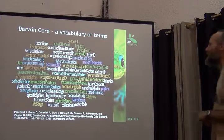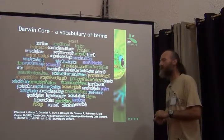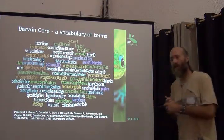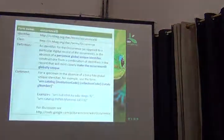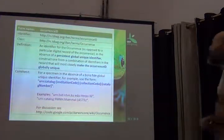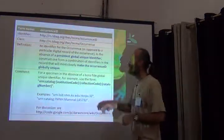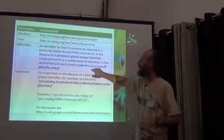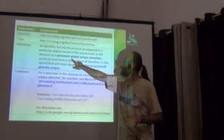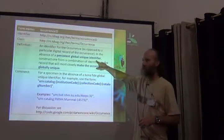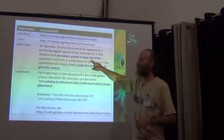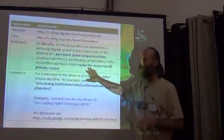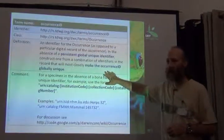Going back to Darwin Core — one example of an identifier we've already seen is the occurrence ID. What's highlighted is that we would like it to be a persistent, global, unique identifier. The recommendation of Darwin Core is that it be a persistent, global, unique identifier. And if there isn't one, construct one that makes it unique globally.